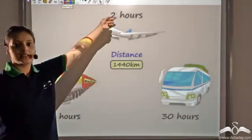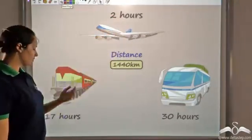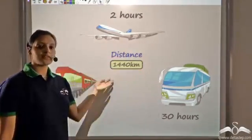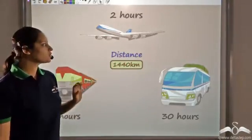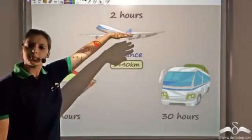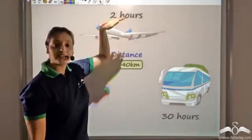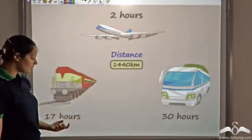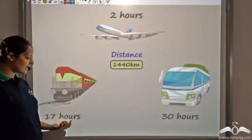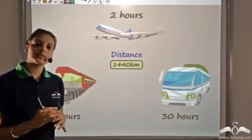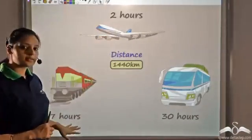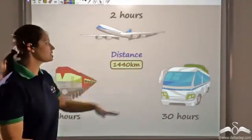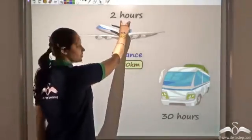So the difference is the time. The plane takes two hours, the train takes seventeen hours, and the bus takes thirty hours to travel the same distance of fourteen hundred and forty kilometers. Can I say the plane is the fastest? Yes, because it is taking the least time. Similarly, the train is faster than the bus because it takes less time to travel that same distance.